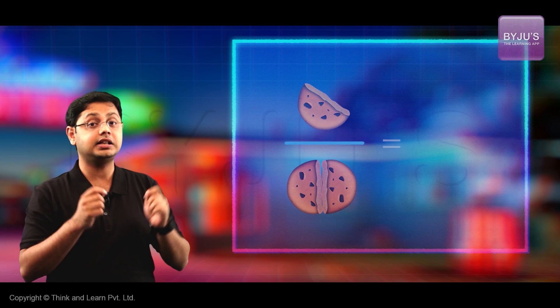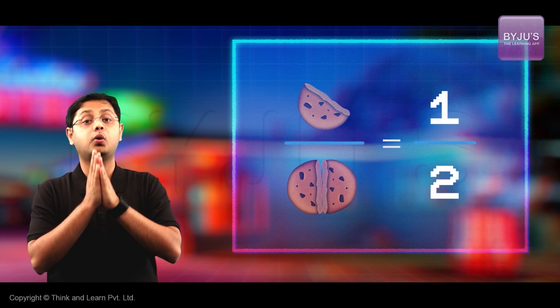Now, remember the cookie that you guys divided into two parts? Those two parts go down here. And you ate one of those parts, right? Which means that goes up there. And it is represented mathematically, as you can see, as one by two.